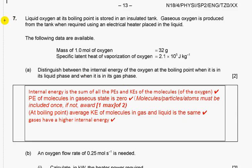Question seven: Liquid oxygen at its boiling point is stored in an insulated tank. Gaseous oxygen is produced from the tank when required using an electric heater placed in the liquid. Distinguish between internal energy of oxygen at the boiling point when it is in its liquid phase and when it is in the gas phase. Internal energy is the sum of all potential and kinetic energy of molecules. PE of molecules in gas state is zero, in liquid state it will be negative. Average KE of molecules in gas and liquid is the same. Gases have a higher internal energy.